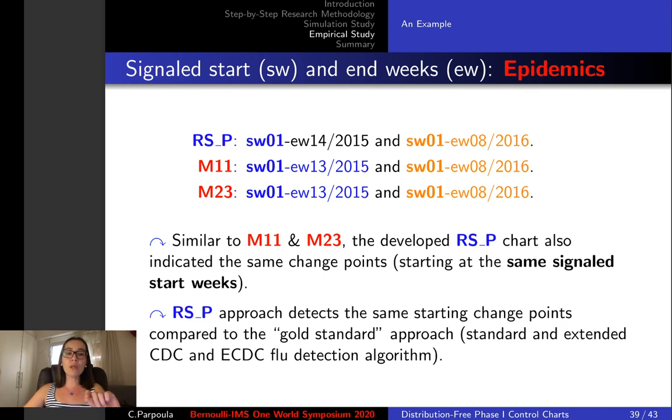Here are the results for the signal start and end weeks for the epidemics. We observed that similar to M11 and M23, RSP technique succeeds to identify the same change points, the same signal start weeks for the epidemics, thus it compares favorably to the gold standard approaches.